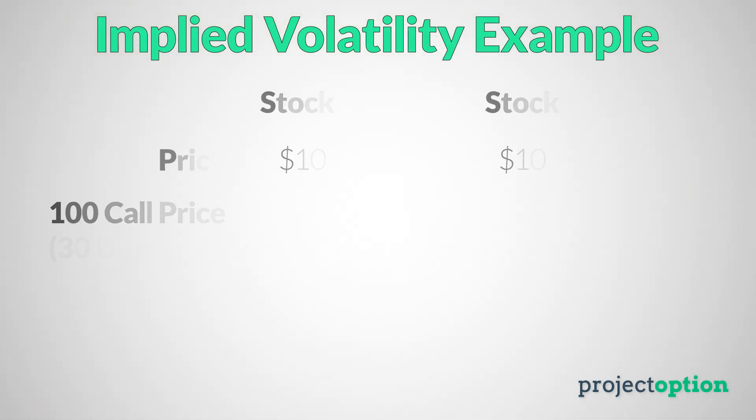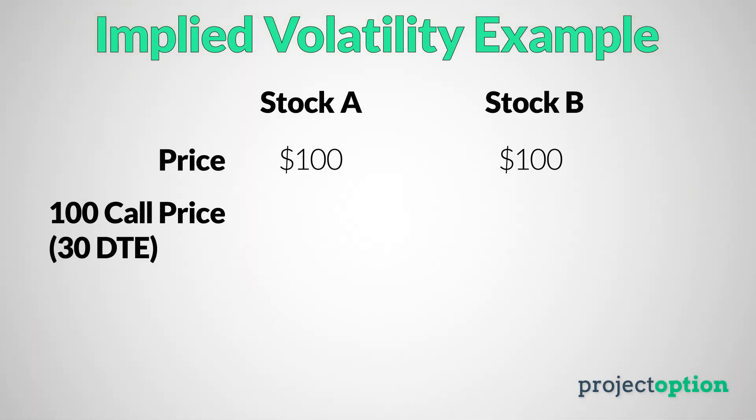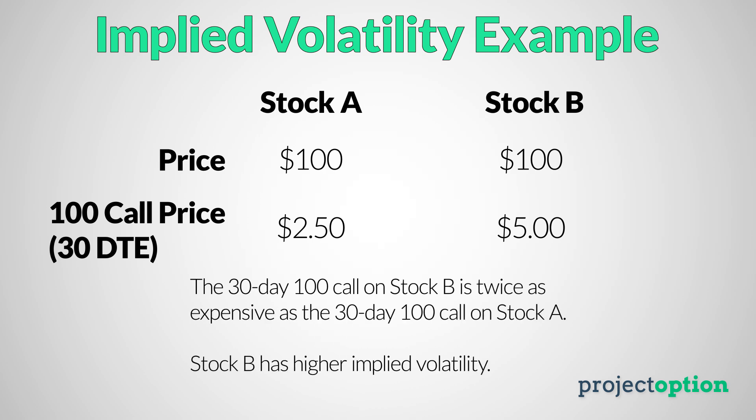I know this is complicated, but stick with me because I'm going to do my best to explain it intuitively. Getting back to an example of what implied volatility actually measures: if we have two $100 stocks and we look at their 30-day option prices, the options with more extrinsic value will give that stock a higher implied volatility reading, because on two $100 stocks with 30 days until expiration, the options that are more expensive are going to tell you which stock has more expected volatility in the future.